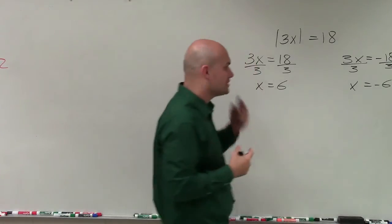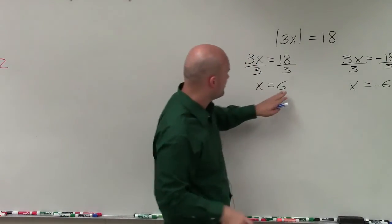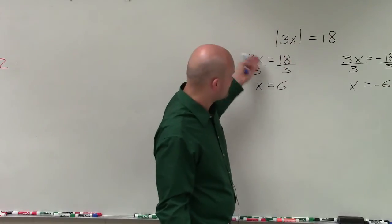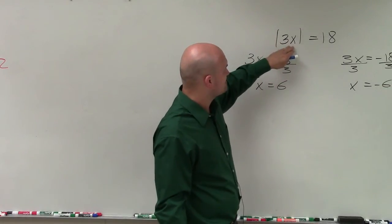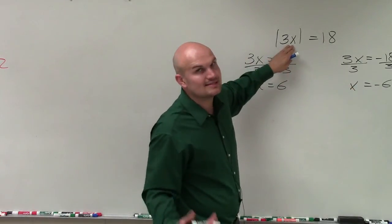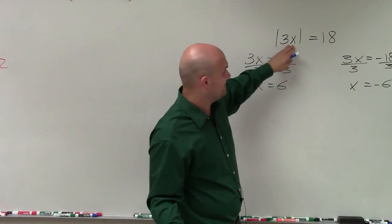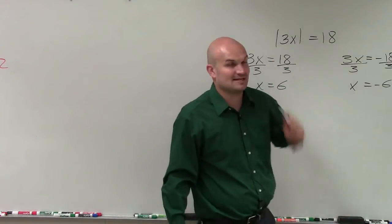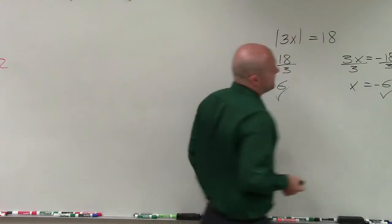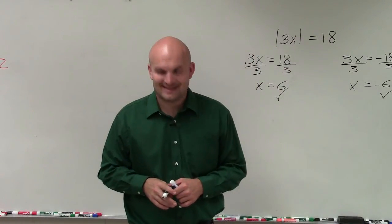Now I need to make sure I test my solutions. So I'm going to plug in 6 and negative 6 into my equation. When I do that, 3 times 6 is 18. Absolute value of 18 is 18. 3 times negative 6 is the absolute value of negative 18. Absolute value of negative 18 is 18. So therefore, both solutions work. Thanks.